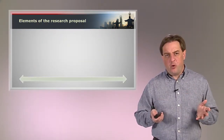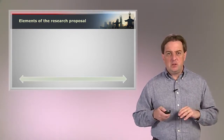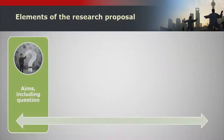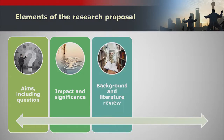What are the typical elements of the research proposal? You'll want to talk about the aims of your research — the broad goals and the question you're trying to address. You should discuss the expected impact and significance: why is it important that the research be done and how is it going to advance the field? You'll also need a background or literature review that shows you have adequate exposure to the key literature within the field.